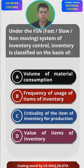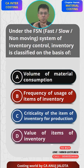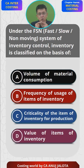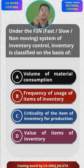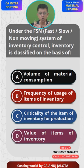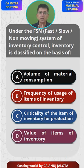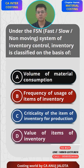So out of the four options, it should be B — frequency of usage of inventory items. Because if the items are getting consumed faster, they are fast-moving; if they are not getting consumed faster, they are slow-moving; and if they are not getting used at all, it is non-moving. Your raw material turnover ratio will help identify which are fast-moving and which are slow-moving.